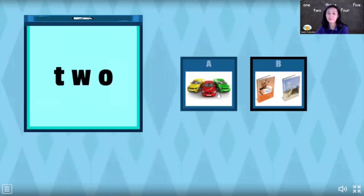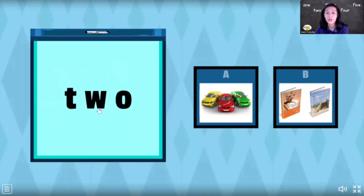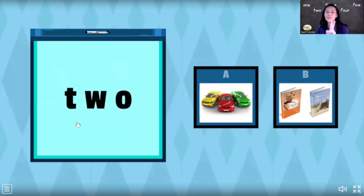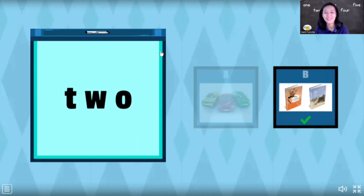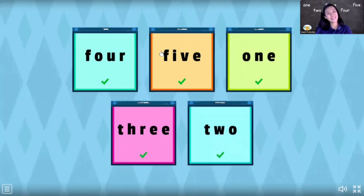Last one — open box number five. Let's spell the number: T-W-O. T-W-O. T-W-O. That's good. Two. Which one is two — is it cars or books? T-W-O. Two. Yes, that's the books!